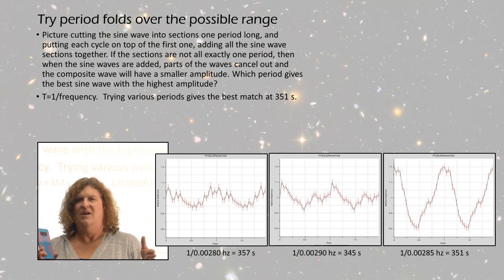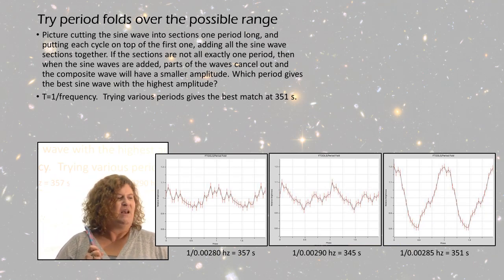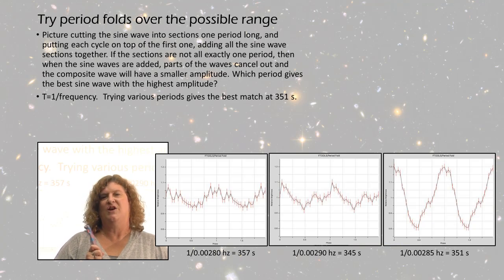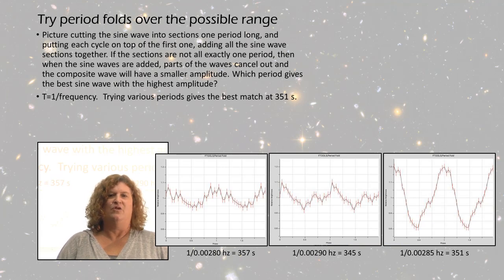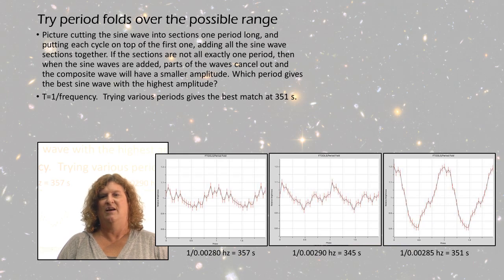If your choice for period wasn't quite right, when you try to add those together, you're going to get destructive interference. Parts of the waves will cancel each other out. But if you've picked the period close to right, when you stack them on top of each other, you'll get constructive interference and your resulting period fold will have a bigger amplitude and look more sine-like.